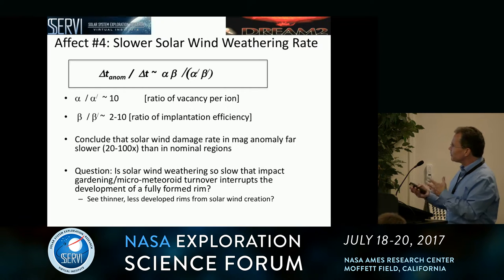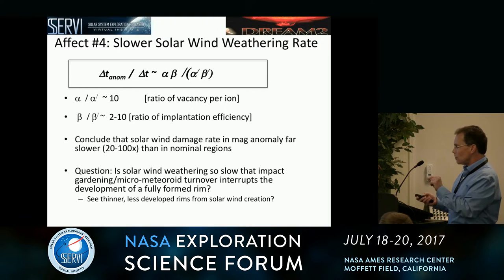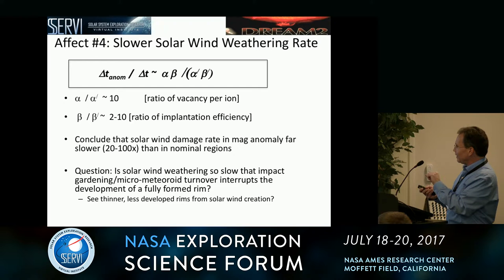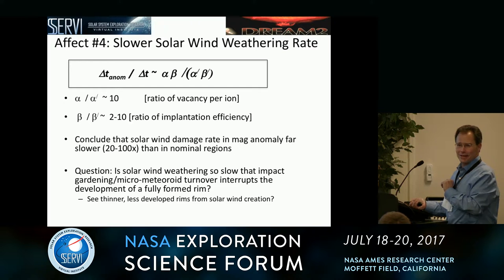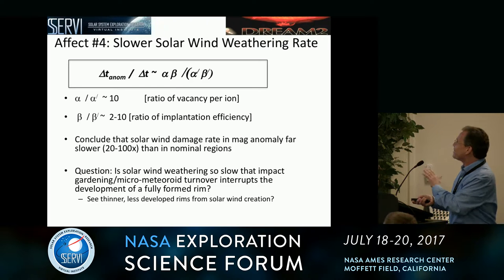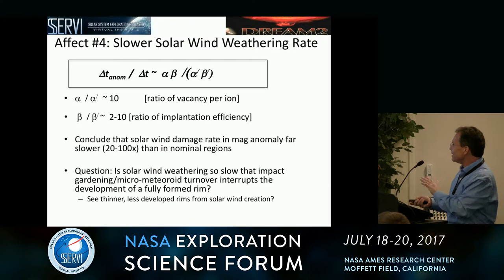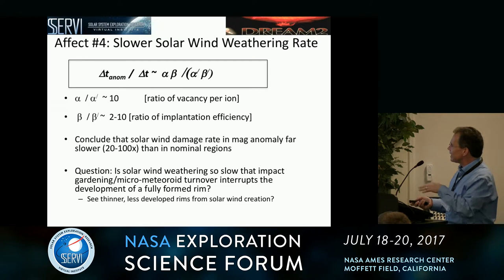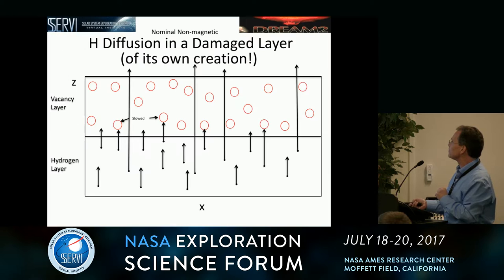That may be enough to make the weathering rate comparable to micrometeoroid turnover. You might think of this as a rotisserie chicken that you've turned too early — the rotisserie chicken model of a regolith. The point is you're probably interrupting the amorphousization process, so that what little damage you're getting is getting overturned before it accumulates — so you're seeing thinner, less developed grain rims.